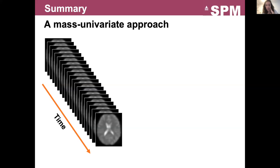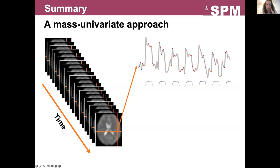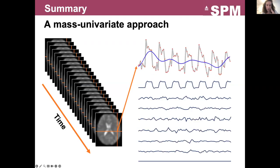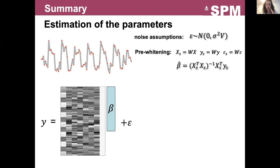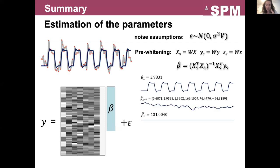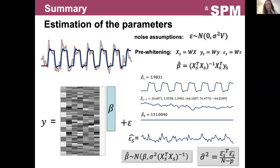If we go back to our initial data set, each time series of every voxel is decomposed in several components, including the stimulus, the mean, and many others if we want. In order to accurately estimate the parameters, temporal correlation must be taken into account. Data can be pre-whitened. This comes down to using a weighted least square approach to estimate the beta coefficient. And for each voxel, a set of beta coefficients is estimated, as well as a standard deviation of the error term.